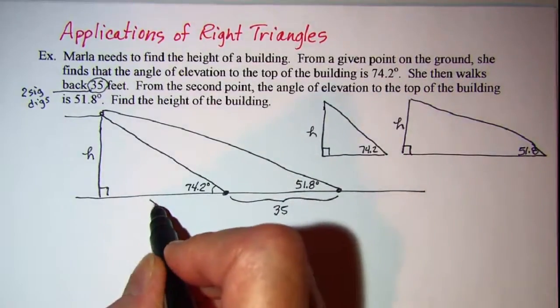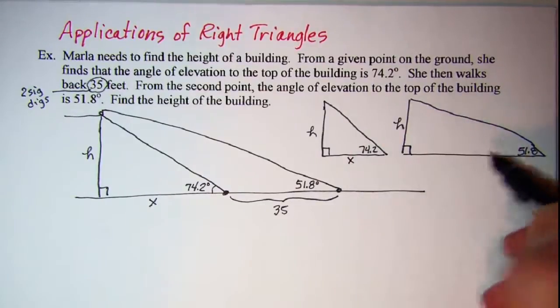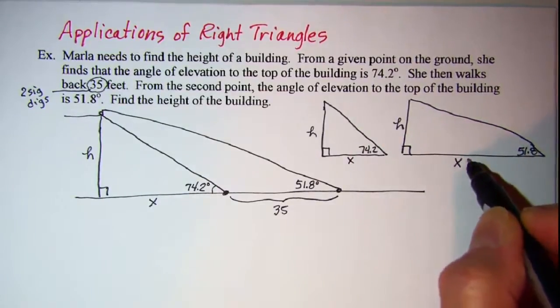This angle is 51.8 and this segment of the base of this triangle is 35, so let's call this part of the base X and we'll call that one X and then this will be X plus 35.